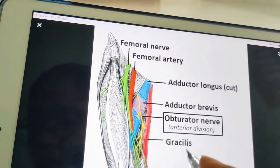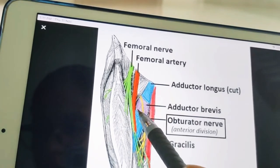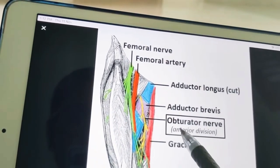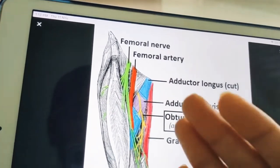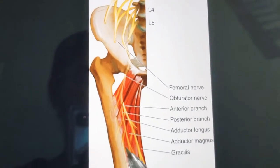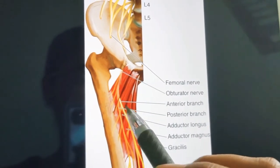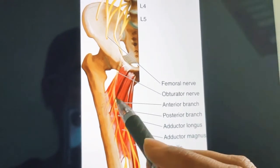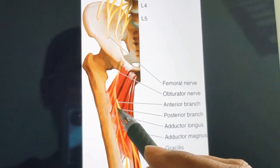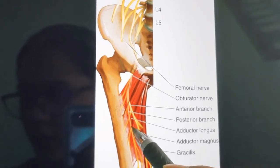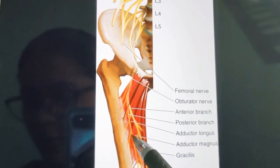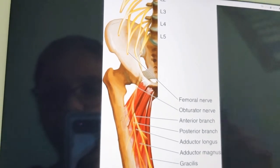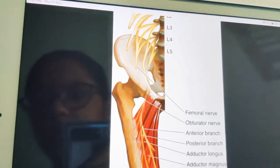The genicular branch of the obturator nerve is actually the continuation of the posterior division of the obturator nerve. The obturator nerve has anterior and posterior divisions. The continuation of the posterior division of the obturator nerve runs on the posterior surface of the popliteal artery, pierces the oblique popliteal ligament, and mainly supplies the capsule of the knee joint.